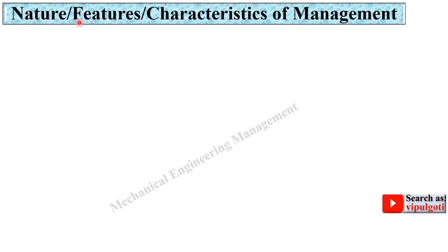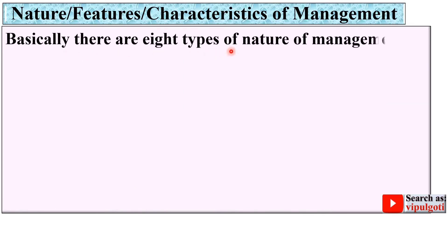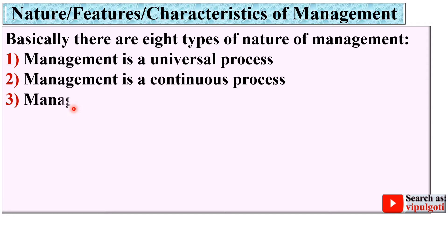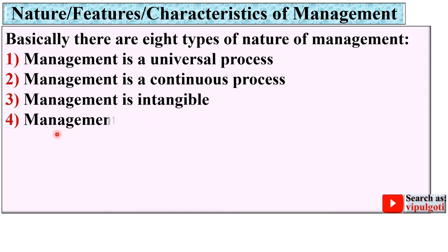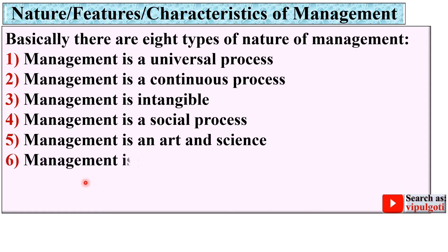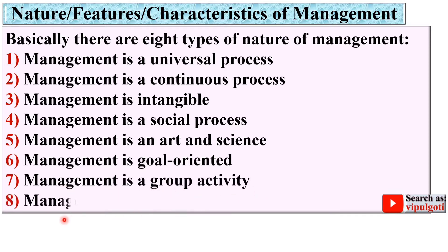Now, the next question — nature, or you can say features or characteristics of management. Basically there are eight types of natures of management. Let's see one by one: management is a universal process; a continuous process; intangible; a social process; an art and science; goal oriented; a group activity; and management is creative.